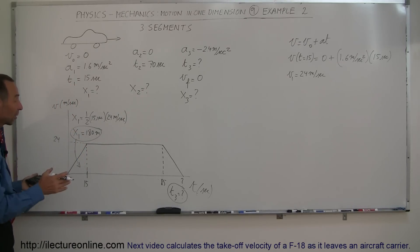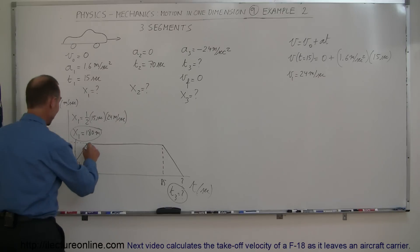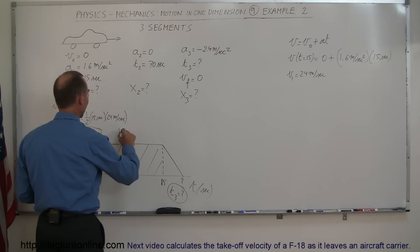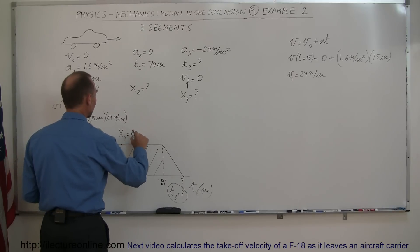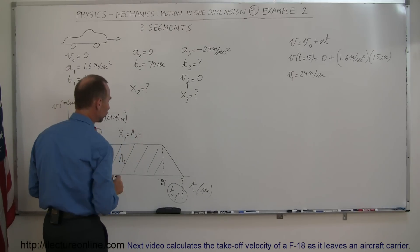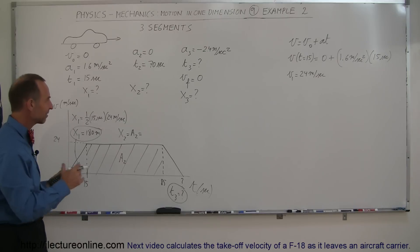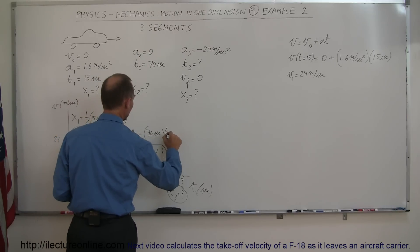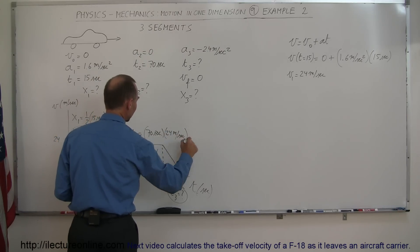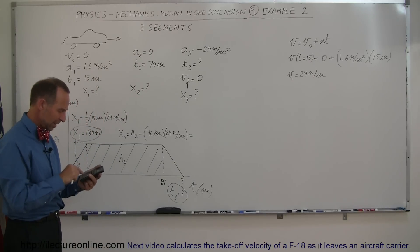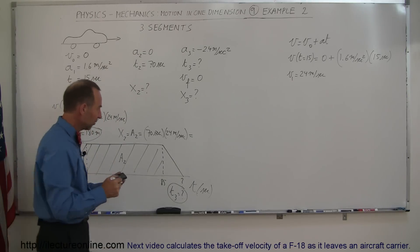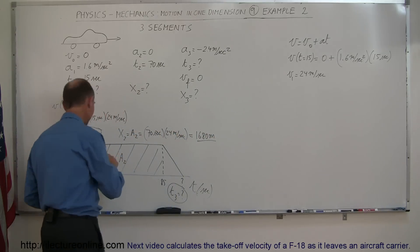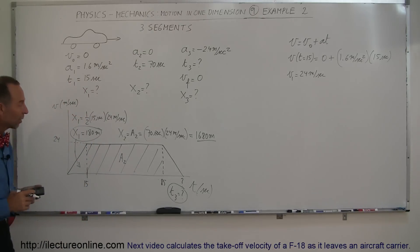The distance in the second segment is the area of that rectangle. X₂ equals base times height: 70 seconds times 24 meters per second. Notice the units work out to leave you with meters. So 70 times 24 equals 1680 meters traveled during that second segment of the motion.